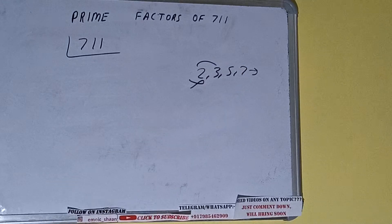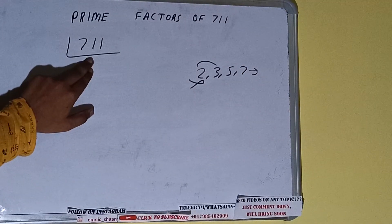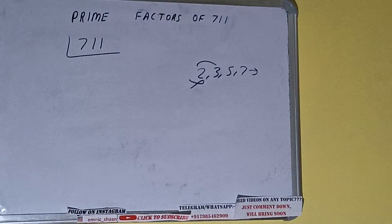So we'll check with the next lowest prime number, that is 3. 3, 2 is 6, 1, 1. 3, 3 is 9, 2, 1. It is divisible by 3.